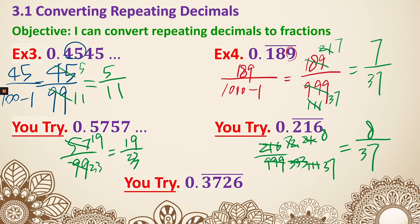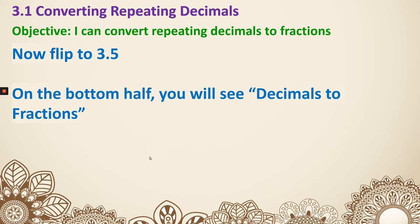Next, 0.3726 repeating. We put 3726, and since there are 4 digits repeating, we put it over four nines, which is 9999. They can be divided by 9, giving us 1111 on the bottom. The top divided by 9 is 414, and there's nothing else we can divide, so that's going to be 414 over 1111.